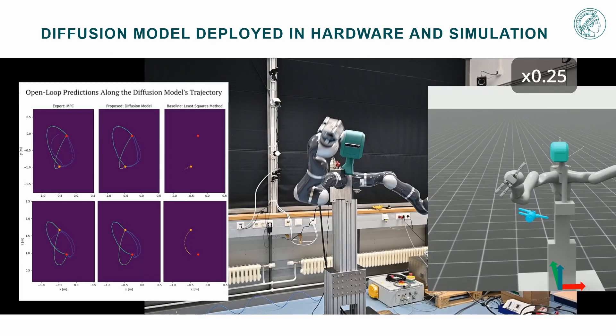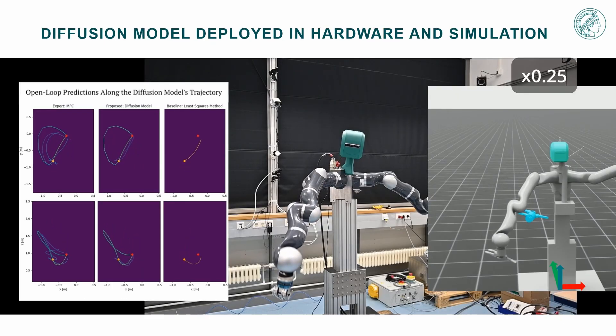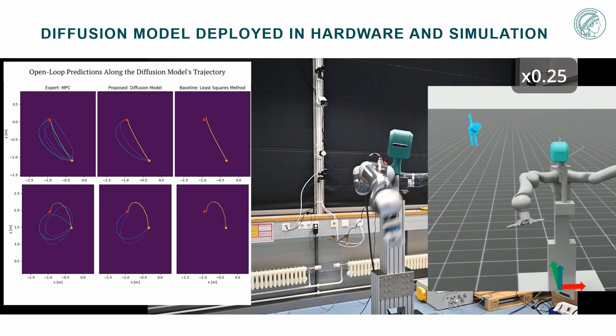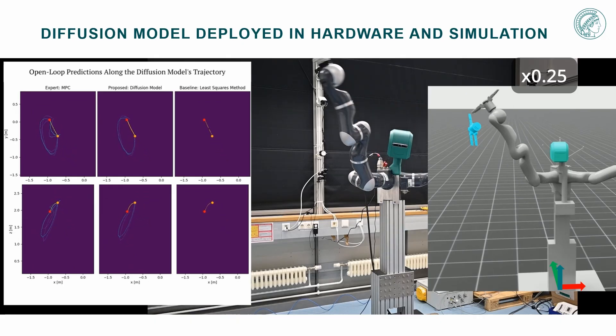With these improvements, we can sample from the distribution in closed-loop within less than one millisecond on a GPU using just five denoising steps. We deploy the system at 250 Hz and observe better stability and convergence compared to the original MPC.